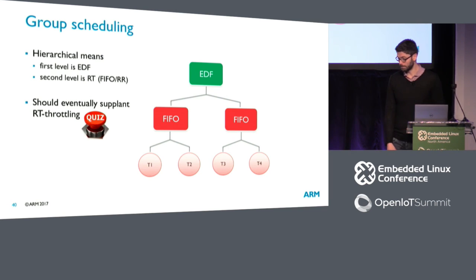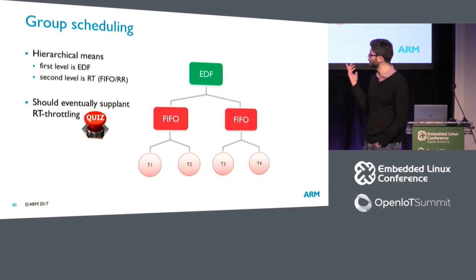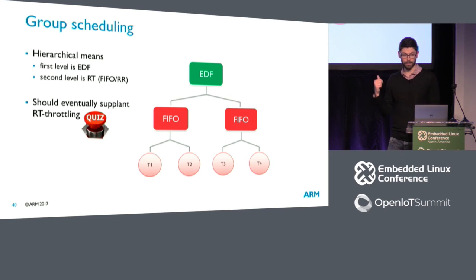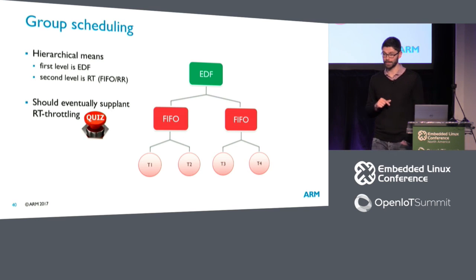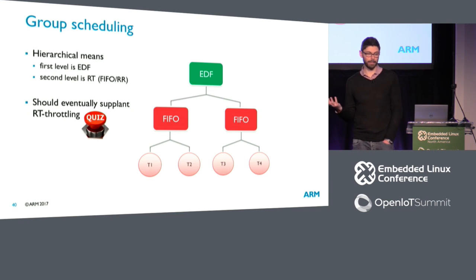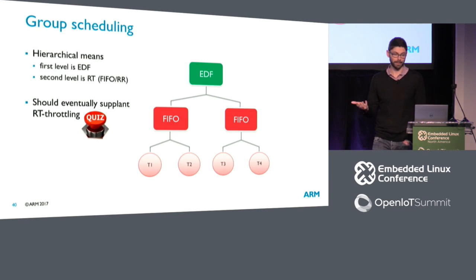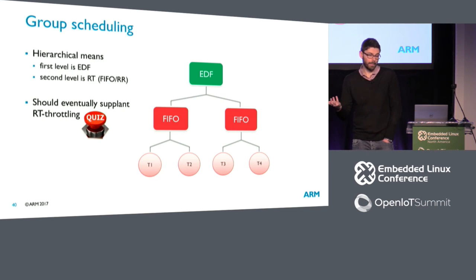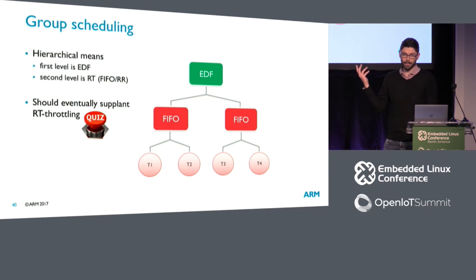This is what we call group or hierarchical scheduling support. You'll have temporal isolation between groups that contain more than one task. At the root level, scheduling is managed by EDF like Deadline already does. Inside the Deadline reservation, tasks are scheduled using FIFO. T1, T2, T3 FIFO tasks execute inside Deadline scheduling entities — the root scheduler picks a group considering deadlines managed by the Constant Bandwidth Server, then a second-level scheduler picks one task using FIFO. The idea — which Peter has mentioned — is to remove RT throttling and substitute it with this mechanism.